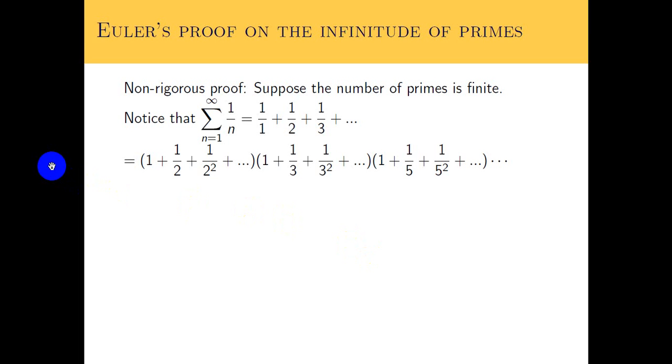Now here's another motivation on why we use analytic functions. This is a non-rigorous proof, simplified just a bit. Back in Euler's time, around 1720 or 1730, he came up with a proof on the infinitude of primes. That means the number of primes is infinite. There's no finite list of primes that compose all the integers. So let's consider the idea that the number of primes is finite. We look at the harmonic series, 1 over n, which is 1 over 1 plus 1 over 2 and so forth.